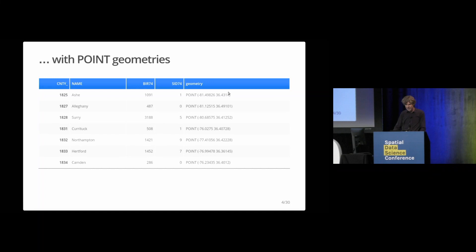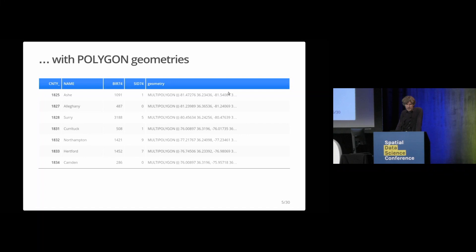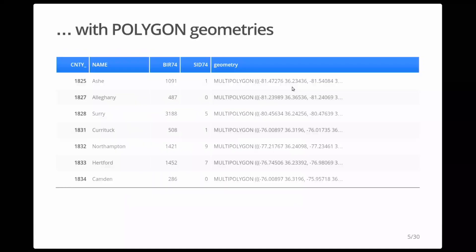Then it gets worse — you see a geometry column that has these funny descriptions of geometries that you can't use as regular numbers. But essentially they describe some kind of location on Earth. It may get worse with more complicated geometries like polygons or multi-polygons, which are sequences of coordinates. They may look human-readable, a little like JSON, but you're not really looking forward to dealing with them.